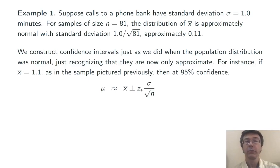Now, we can compute confidence intervals just like we did when the population distribution was known to be normal. We just have to recognize that now our confidence intervals are only approximate. So, suppose we go out and get a sample of size 81, finding a sample mean of 1.1 minutes. That was the sample mean in that histogram I showed a few slides ago.